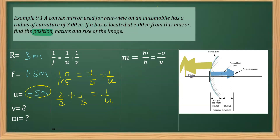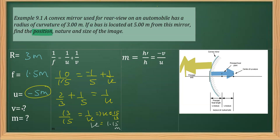Taking the LCM and simplifying, we get 13/15 = 1/v, and therefore by cross multiplication, v = 15/13. In decimal, this comes out to approximately 1.15 meters. We can see that v is positive, which means the image is formed on the right-hand side of the mirror — that is, behind the mirror. In the case of a convex mirror, the image formed is always virtual, always erect, and always smaller in size.